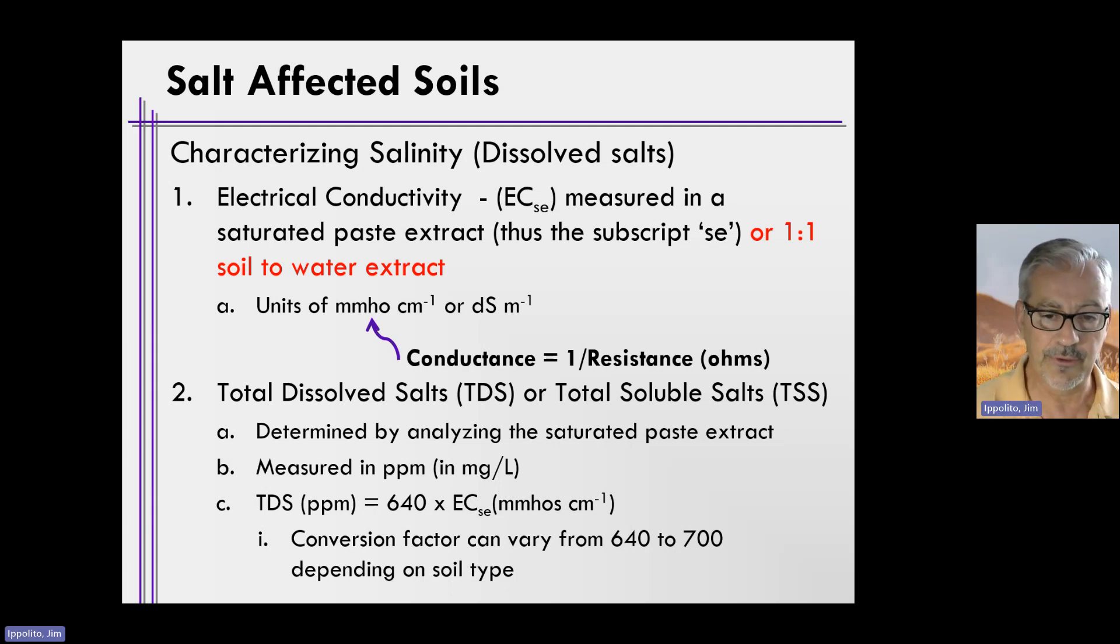The factor, the conversion factor of 640 fluctuates depending on the soil type, and it ranges somewhere between 640 and 700, depending on whether it's sandy or fine textured soil.